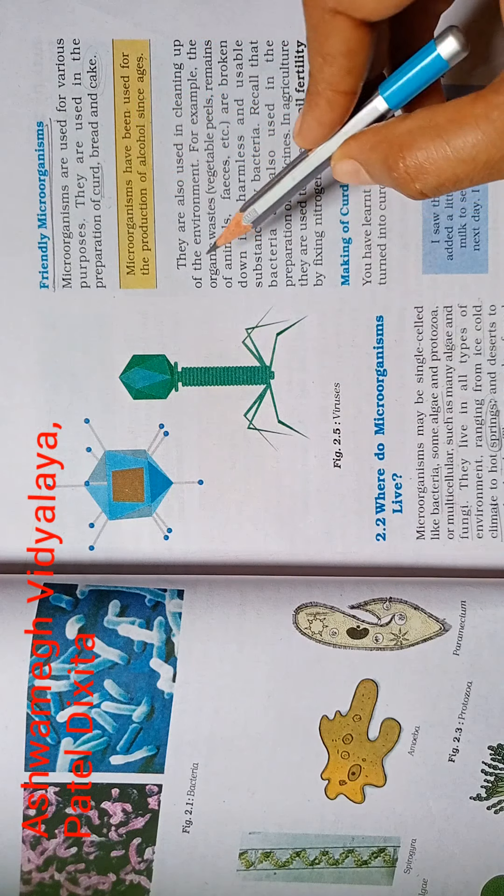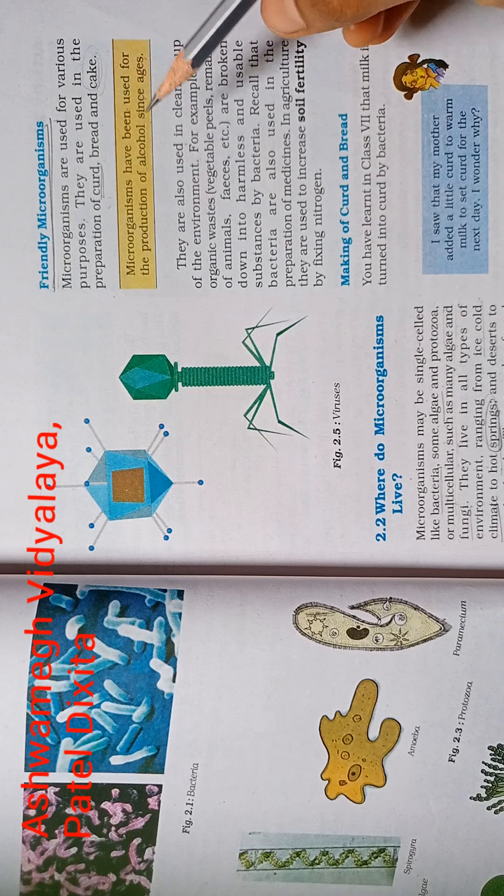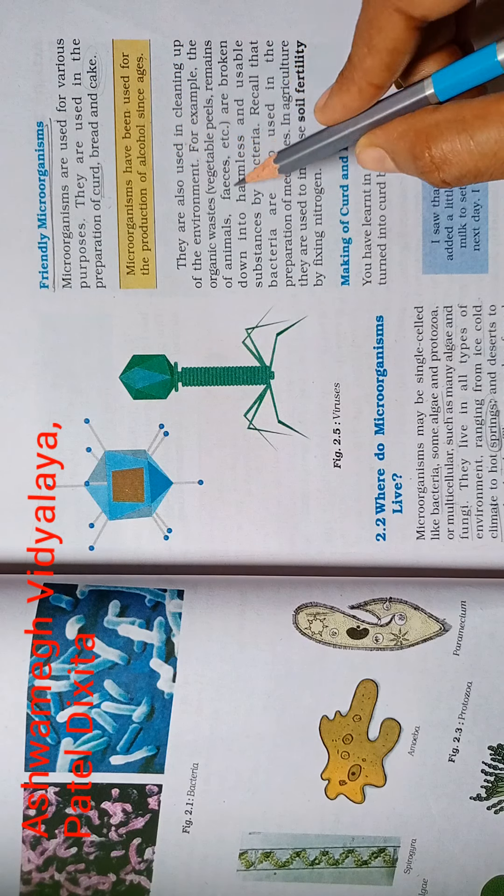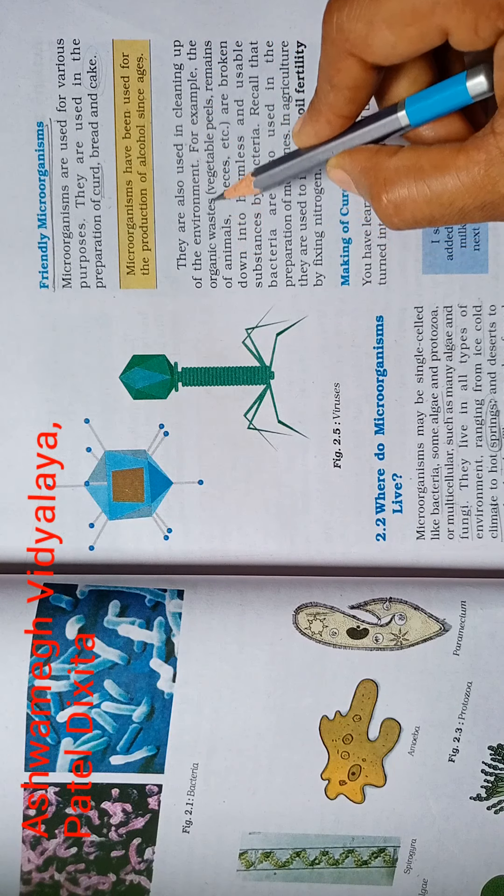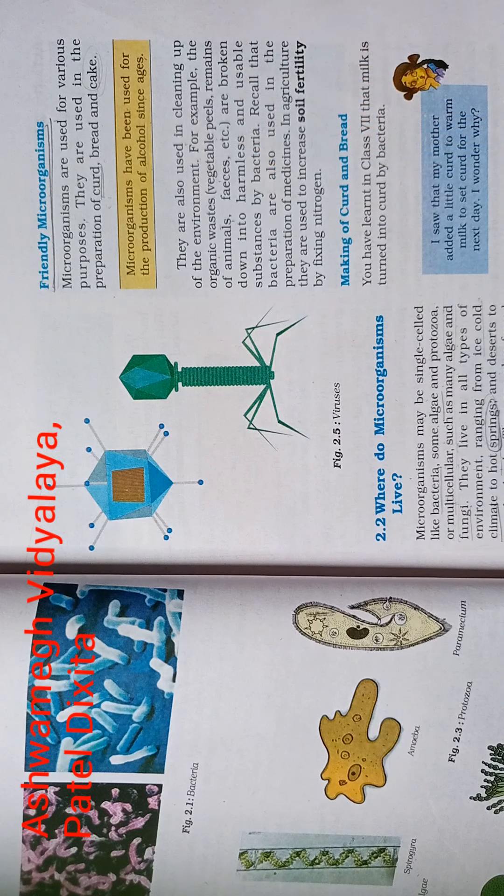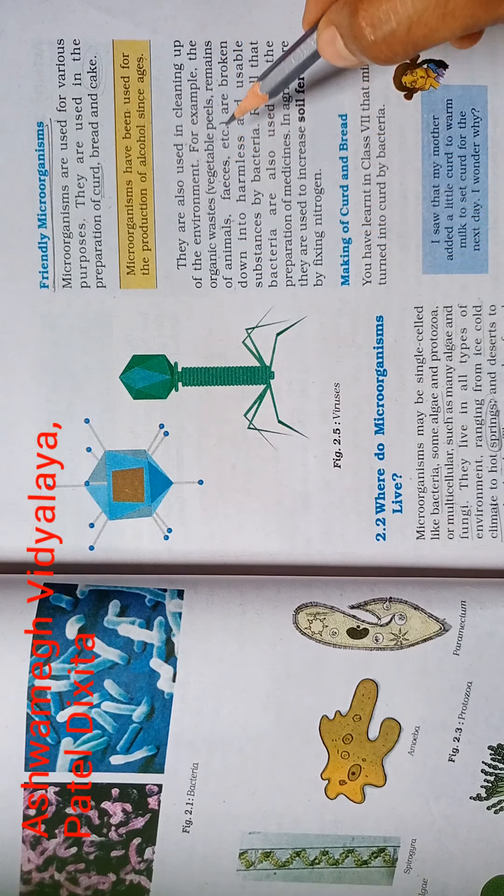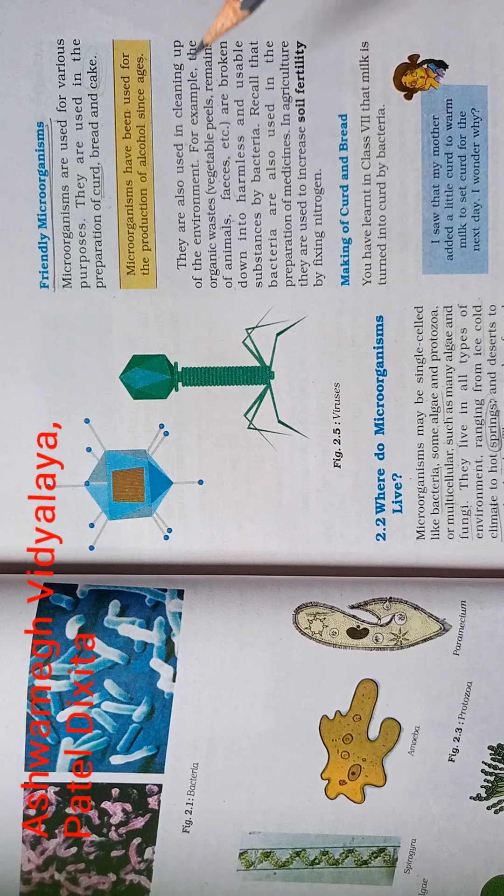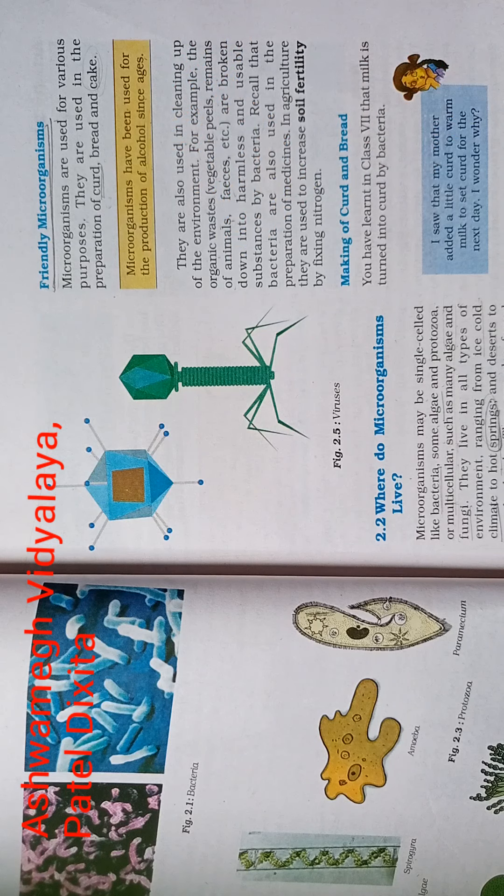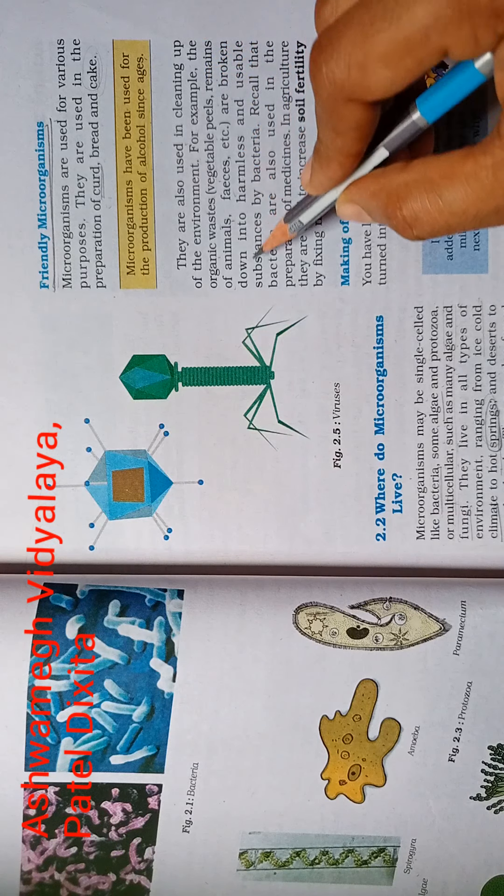They are also used in cleaning up of the environment. For the environment cleaning, microorganisms are used. For example, the organic waste like vegetables, vegetable peels, remains of animals, and feces are used for cleaning and digestion.